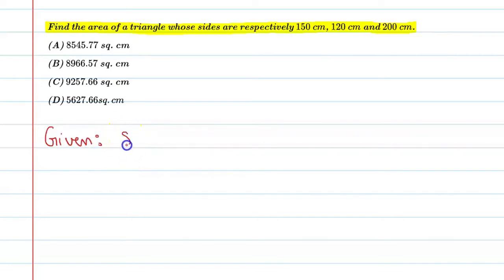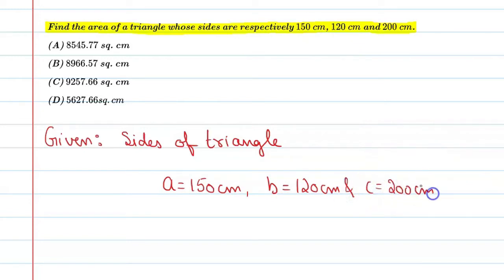The sides of triangle - let's say a is equal to 150 centimeters, b the another side is equal to 120 centimeters, and c the last side is 200 centimeters. Okay, so let's find the area of triangle.